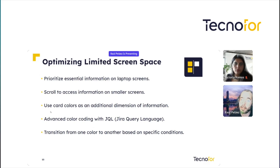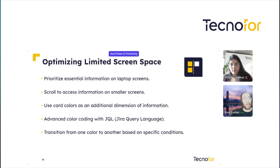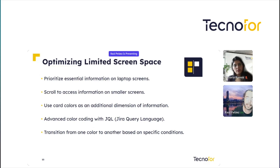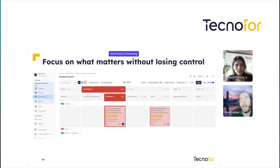You can use colors as an additional dimension of information. We can add advanced color coding with JQL language. For example, you can set the color for tasks whose priority is 'Highest' in super red, and if the priority is 'Normal' you can see it in orange. When the priority changes, the color changes on the card. We can also transition from one color to another based on specified conditions, helping us focus on what matters without losing control.